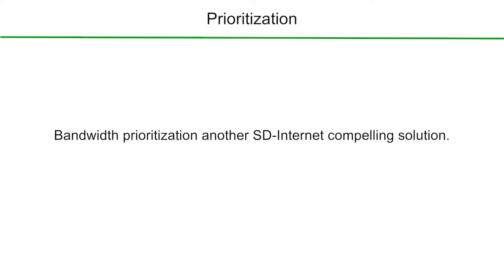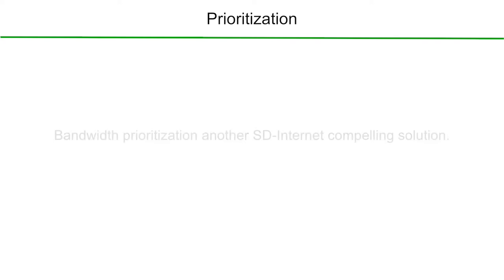What also makes SD Internet a compelling solution is the ability to prioritize bandwidth for your most important applications. In this example, we know video is the top priority for the office. SD Internet is used to prioritize most of the bandwidth for the video application. Bandwidth can also be allocated accordingly to the second and third most important applications. Without this capability, you would have very little, if any, control over how your bandwidth resources are being used.